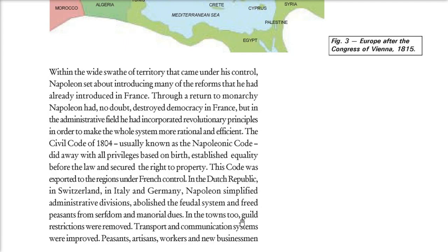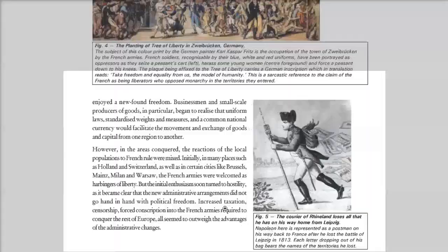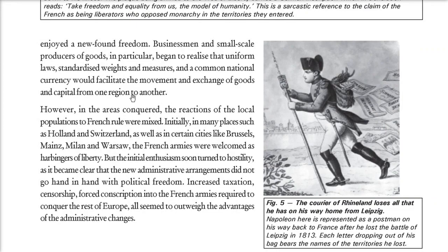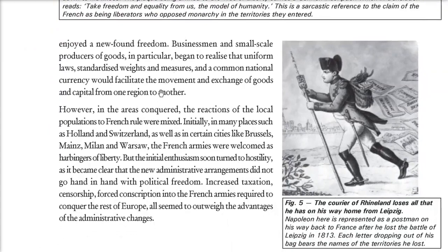Peasants, artisans, workers, and new businessmen found these changes very appealing — now they could exchange goods from one region to another and gain profit. However, not everyone welcomed this invasion. Initially, French armies were welcomed in places like Holland, Switzerland, and cities like Brussels, Mainz, Milan, and Warsaw. But soon it turned into hostility, because the new administrative arrangements Napoleon brought did not go hand in hand with political freedom. There was increased taxation, censorship, and forced conscription into the French armies required to conquer the rest of Europe — more disadvantages than advantages.